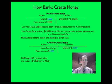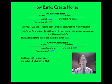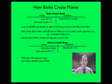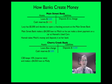Step three: Hannah, who now has forty-five hundred dollars of Mitch's money, takes it and deposits it at her bank, the Cherry Creek Bank. What happens to Cherry Creek Bank's T-account? There's been no change to loans because Cherry Creek didn't issue a loan. Their cash reserves went up forty-five hundred dollars when Hannah deposited that money, and their deposits went up when Hannah put that money in.